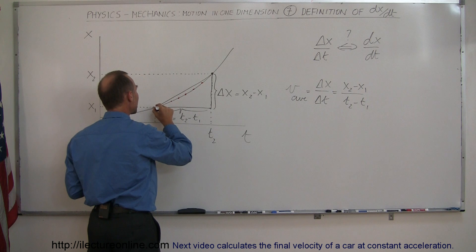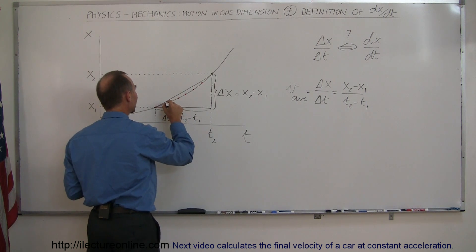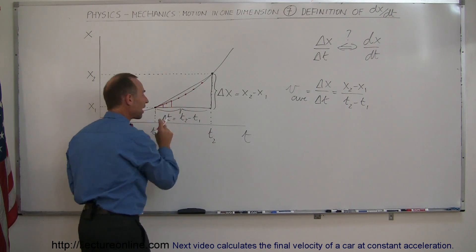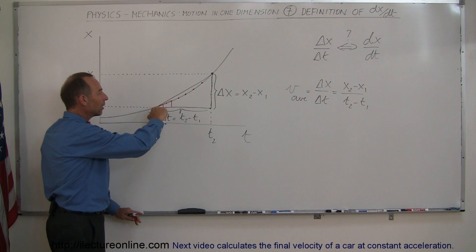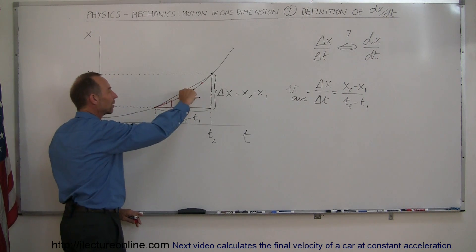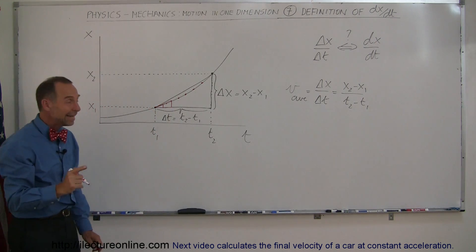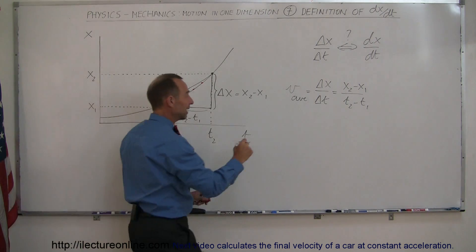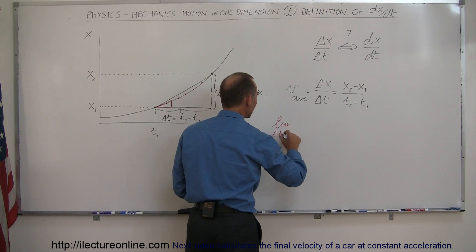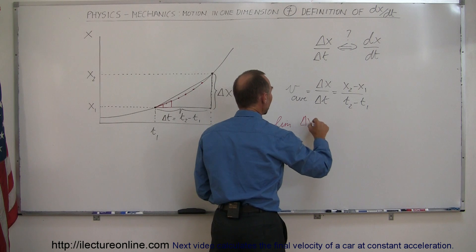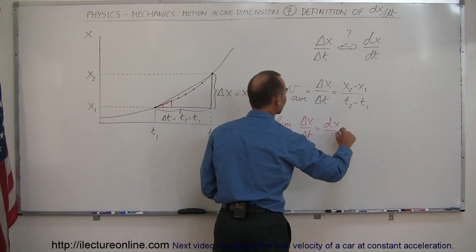As we bring it in closer and closer, the triangles we're making become smaller and smaller. Notice how that triangle becomes really, really small, and notice how the hypotenuse of the triangle becomes closer and closer to the actual slope of the line. In the limit, as delta t goes to zero, the change in x over the change in time becomes dx/dt.